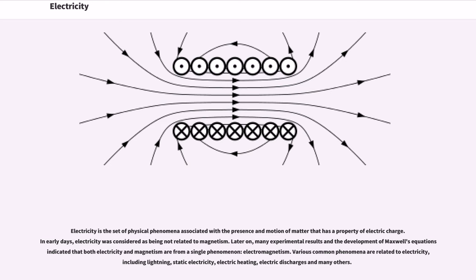Electricity is the set of physical phenomena associated with the presence and motion of matter that has a property of electric charge. In early days, electricity was considered as being not related to magnetism. Later on, many experimental results and the development of Maxwell's equations indicated that both electricity and magnetism are from a single phenomenon, electromagnetism. Various common phenomena are related to electricity, including lightning, static electricity, electric heating, electric discharges and many others.